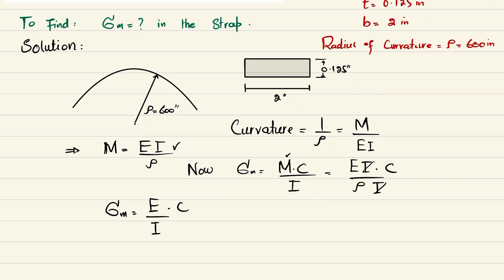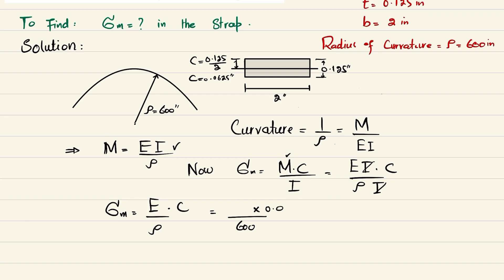Now, c is the distance from the neutral axis to the outermost fiber. Since the thickness is 0.125 inch, c equals 0.125 divided by 2, which equals 0.0625 inch. Rho is 600 inch. So we have: sigma = E times 0.0625 divided by 600.